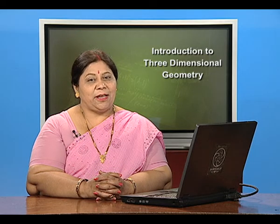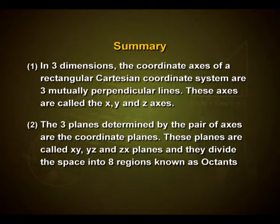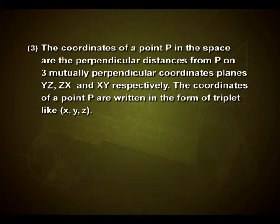Let us summarize the chapter of 3-dimensional coordinate geometry. In 3 dimensions, the coordinate axes of a rectangular Cartesian coordinate system are 3 mutually perpendicular lines called the x, y, and z axes. The 3 planes determined by the pairs of axes are the coordinate planes: the xy, yz, and zx planes, which divide space into 8 regions known as octants.